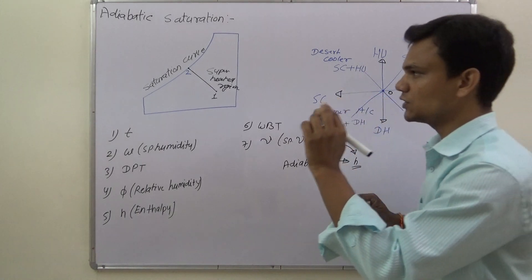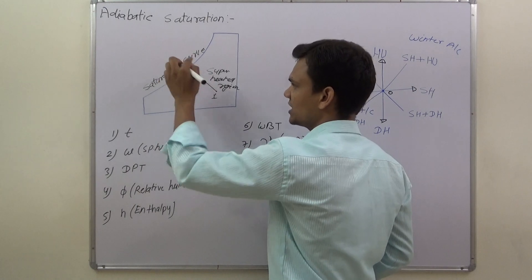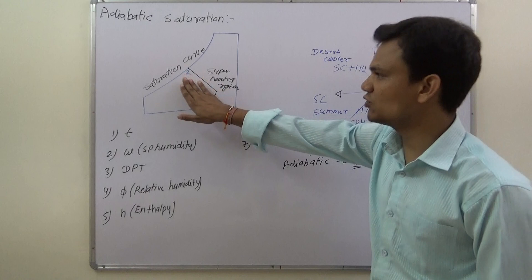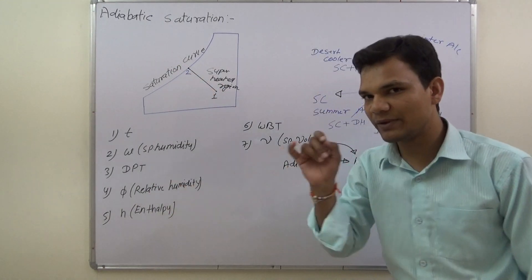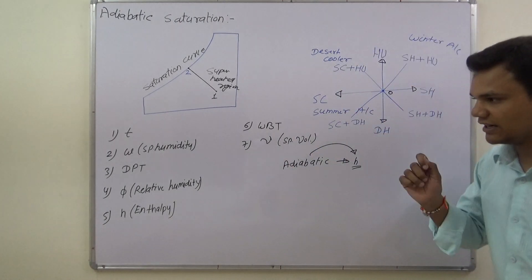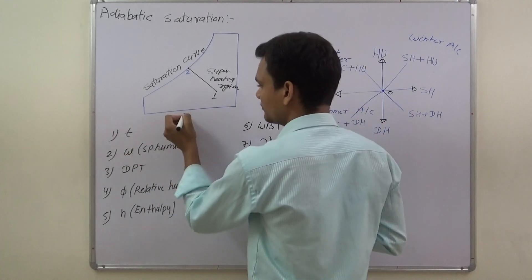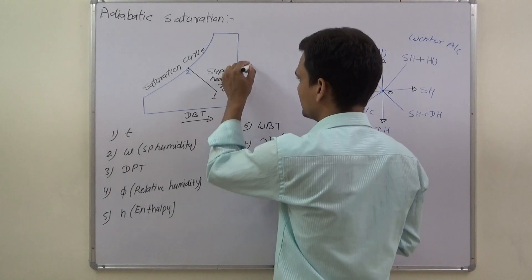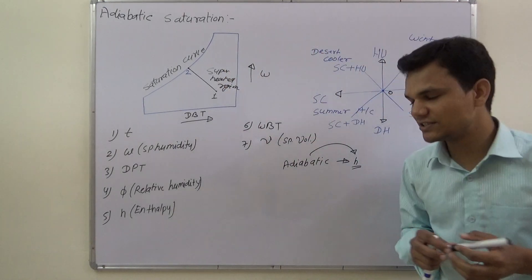During adiabatic saturation, we go from the superheated region to the saturation curve. At the saturation curve, the relative humidity of the air will be 100%, or the air will be 100% humidified. The dry bulb temperature increases in the positive x-direction, and specific humidity increases in the positive y-direction.